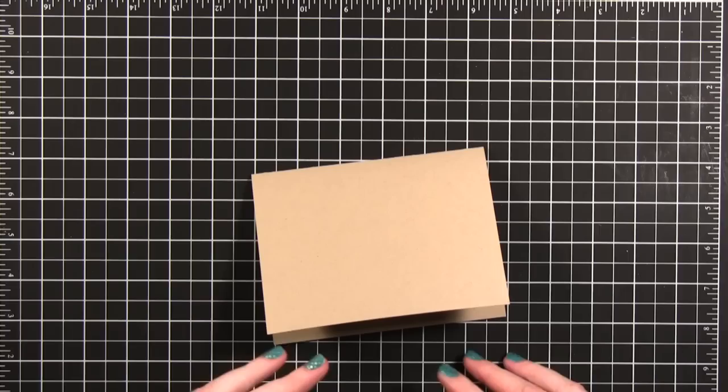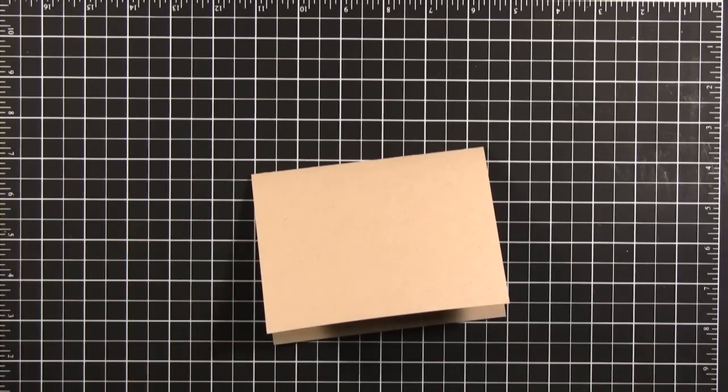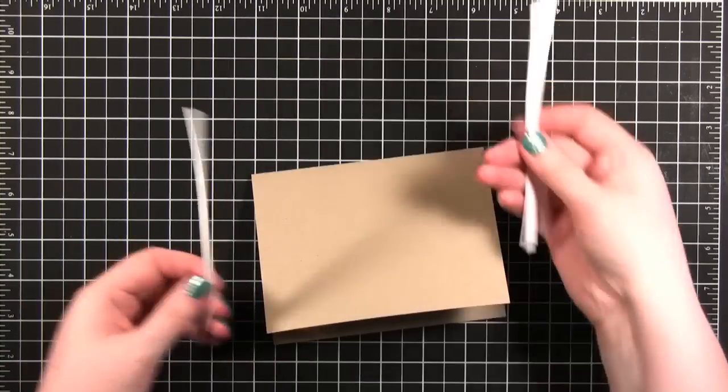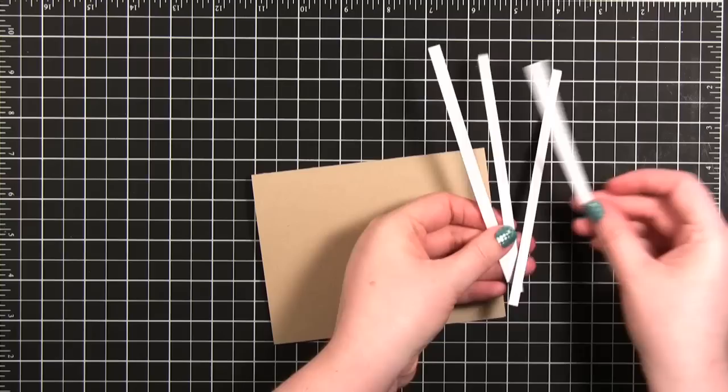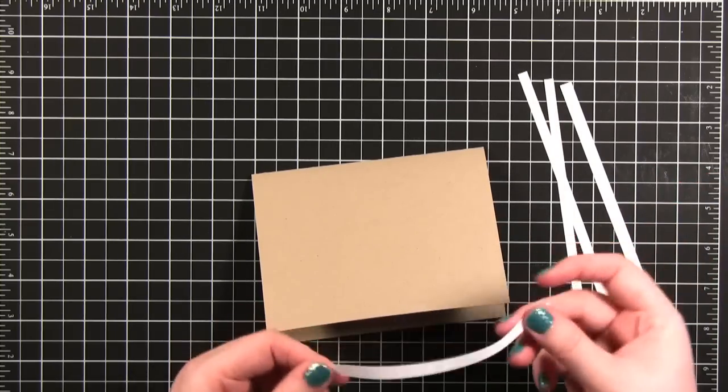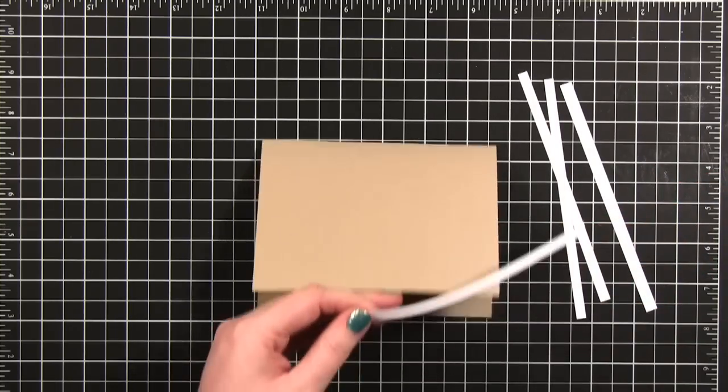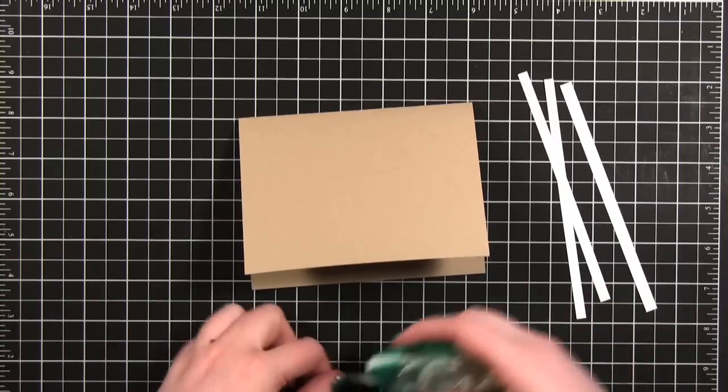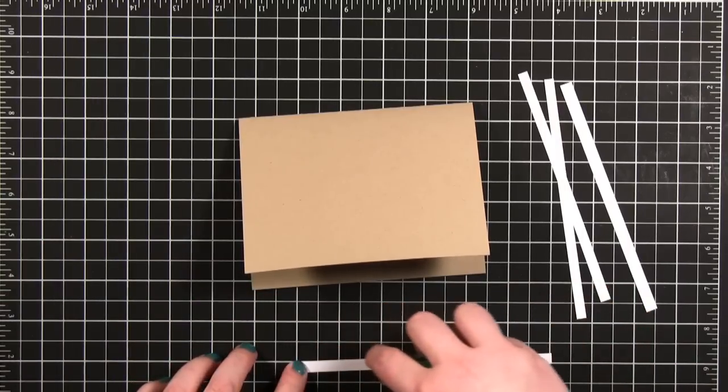We're going to do a lot of stamping today, but we're going to do some masking with it as well. I've got these four strips of just printer paper. They're a quarter inch wide each. I'm actually going to apply them to the edges of the card using some removable adhesive.